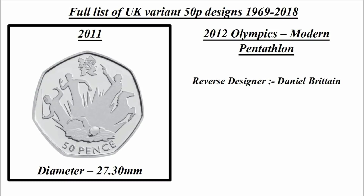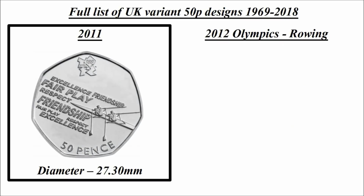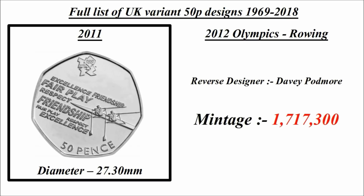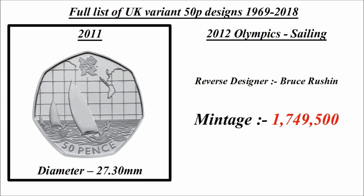Mintage 1,768,900. Olympics rowing: reverse designer David Podmore, mintage 1,717,300. Olympics sailing: reverse designer Bruce Roshin, mintage 1,749,500.